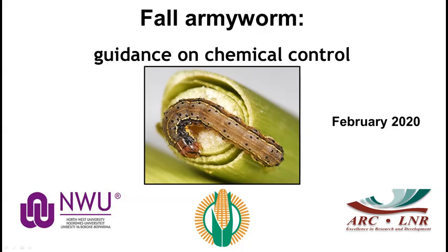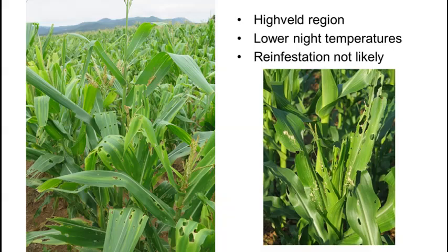In this brief video we provide guidance on chemical control of fall armyworm. We do not indicate which insecticides should be used, but we mention the types of damage, when to spray, and also economic thresholds. The information we provide applies to maize production on the Highveld and Western maize production regions of South Africa and not the low-lying warm and humid areas of the country.